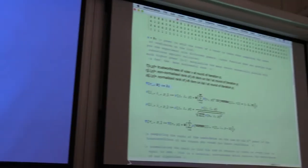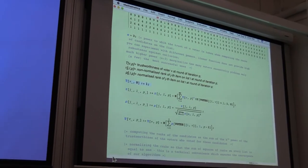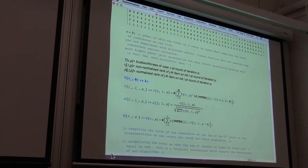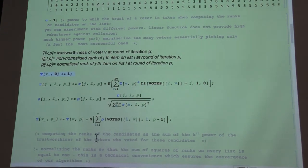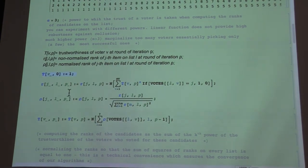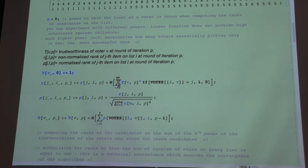Now for the purpose that the algorithm converges, we have to normalize this. So the ranks are not just this sum total of trustworthiness of the voters that voted for that item,